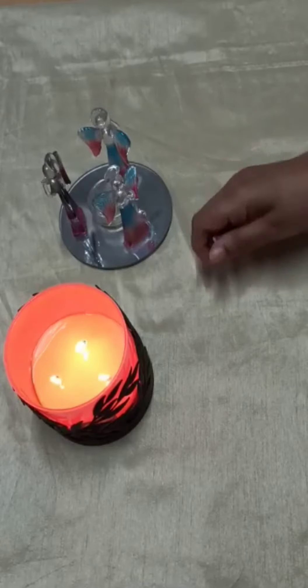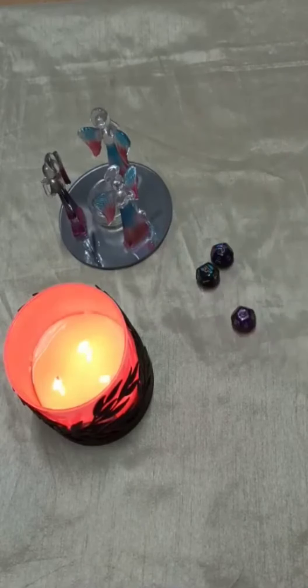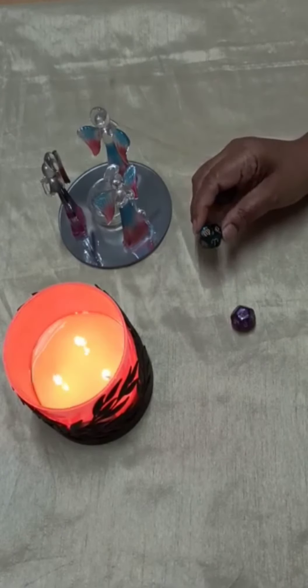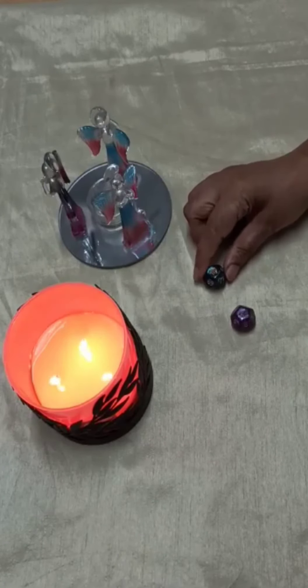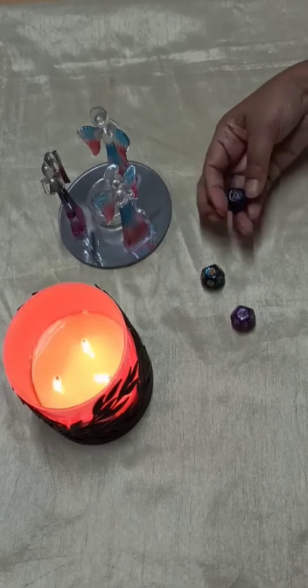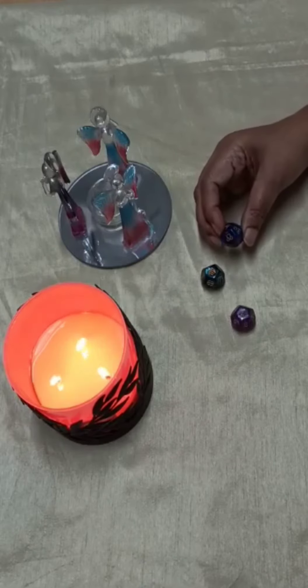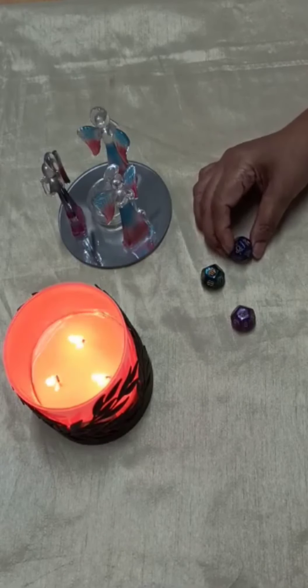The houses die is for the areas of concern. This green one is the signs, which is all about emotions and follows the zodiac pattern. And this is the planets die, which is all about actions and influence.